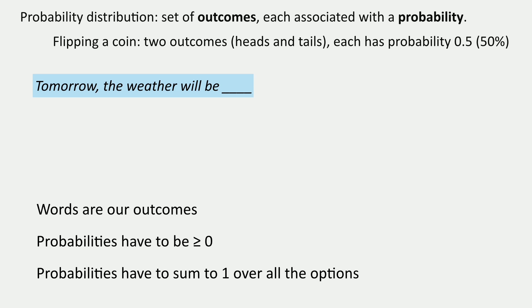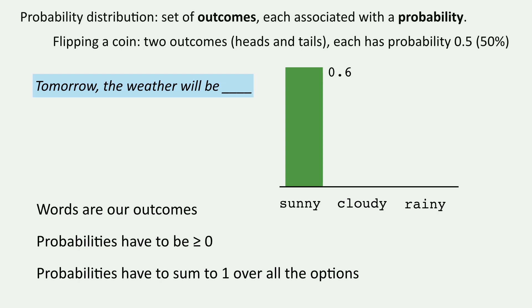In this case our outcomes are words. We have three words that could come next, so we're going to think about assigning probabilities to sunny, cloudy, and rainy. Probabilities have to be greater than or equal to zero and sum to 1. So if we have a 60% chance — 0.6 — for sunny and 0.2 or 20% for cloudy, you can already figure out that rainy must be 0.2 as well, since 0.6 plus 0.2 is 0.8 and they must sum to 1.